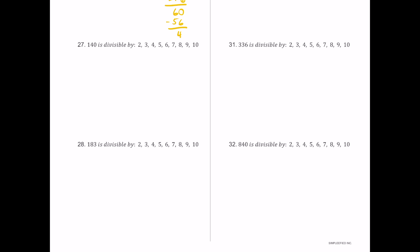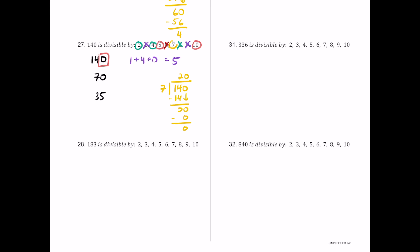For number 27, we have 140. It ends in 0, so 2 works. Half is 70 — still even — so 4 works. Half of 70 is 35, which is odd, so 8 fails. The digit sum 1 plus 4 plus 0 is 5, so 3 and 9 both fail. It ends in 0, so 5 and 10 work. Since 3 failed, 6 fails. Dividing 140 by 7 gives exactly 20 with no remainder, so 7 works.